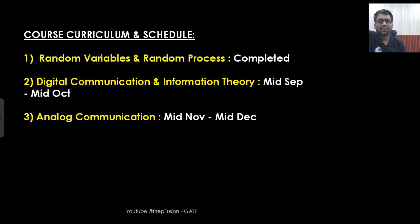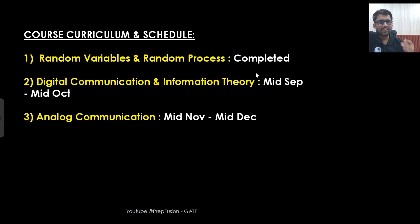Now the most important part: course curriculum and schedule. The curriculum covers random variables, random processes, digital communication and information theory, and analog communication. Random variable and random process is already completed. Digital communication and information theory will run from mid-September to mid-October. I am taking both EDC and communication courses in parallel, so I will start recording from mid-September and complete it by mid-October.